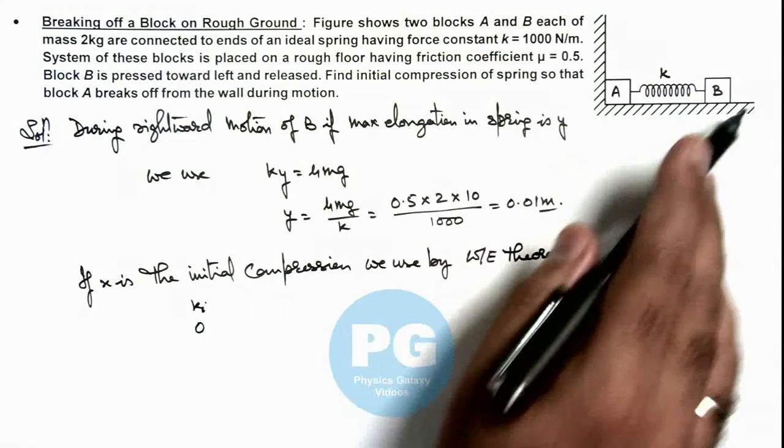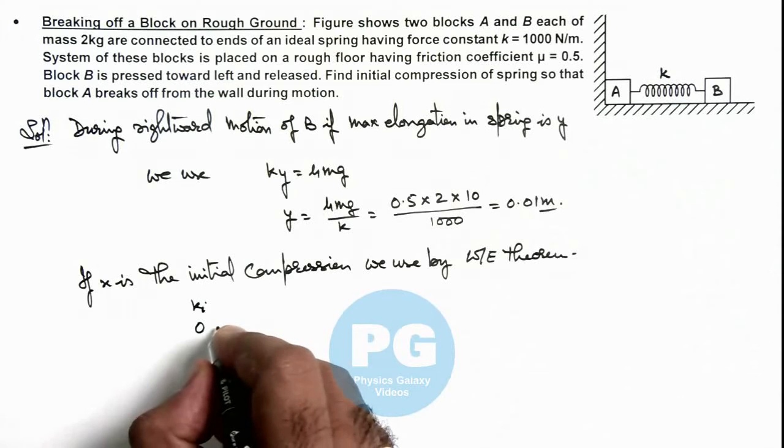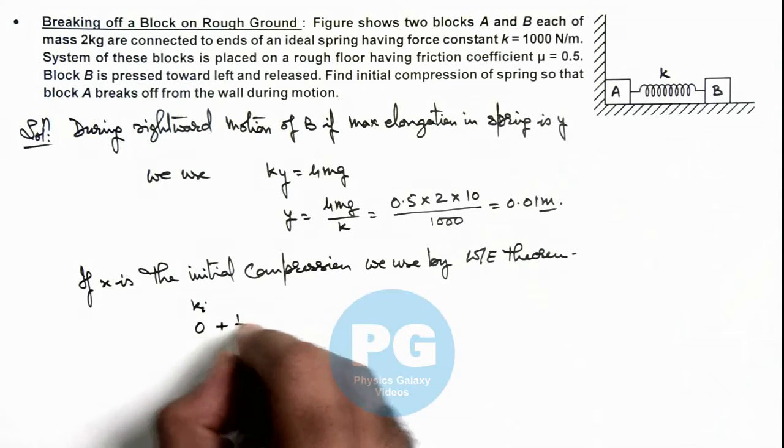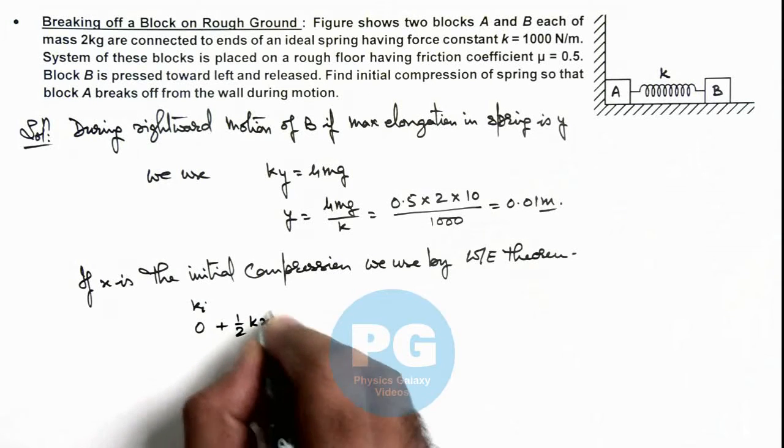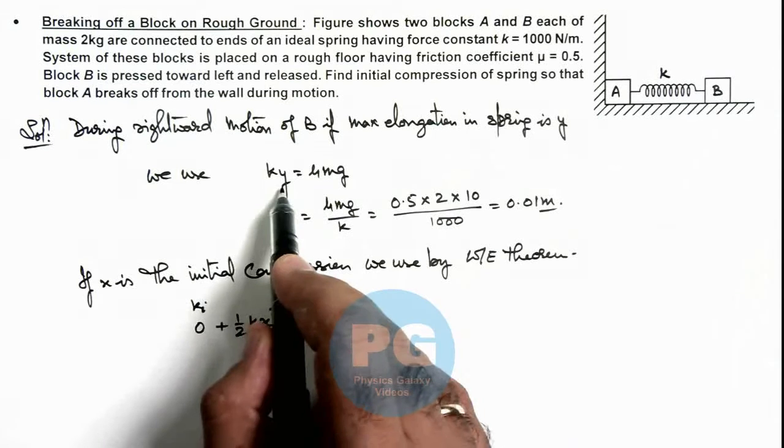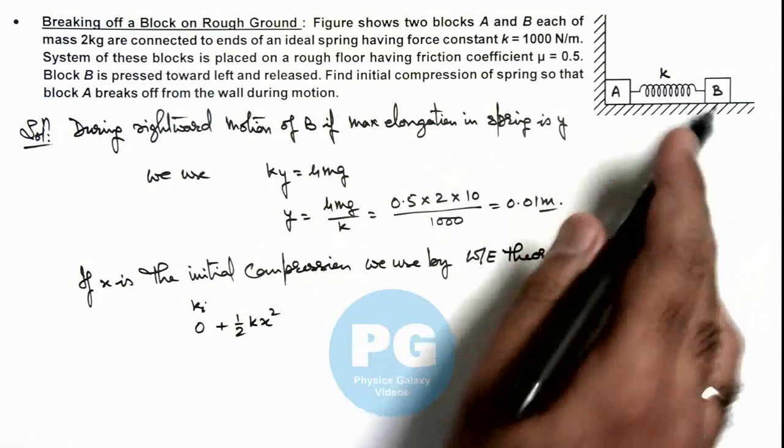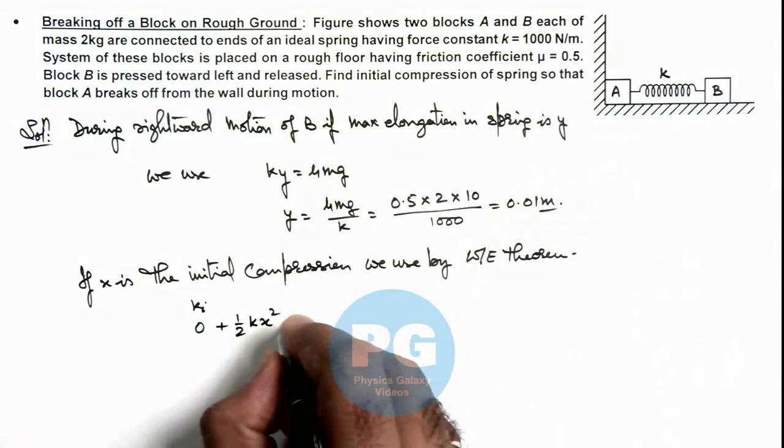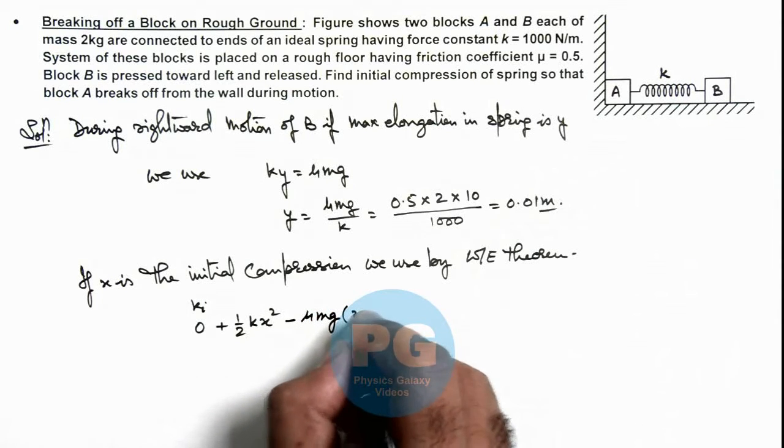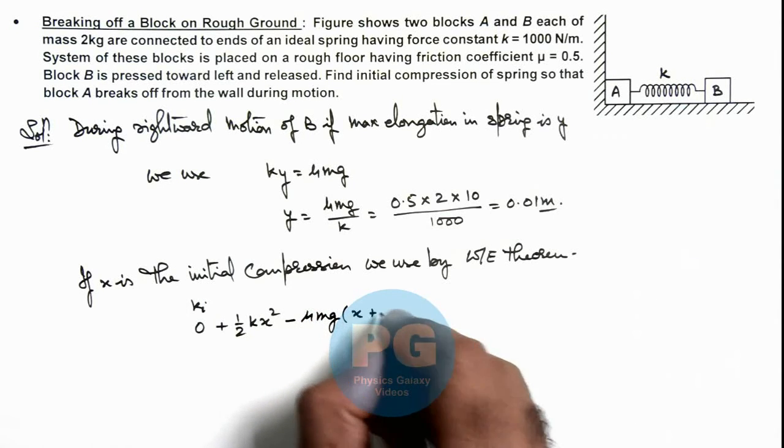When it is released it will move toward right, so work done by spring onto it will be plus half kx squared. And we have taken B will move toward right by a distance y from the natural length of spring, so the work done by friction will be minus μmg multiplied by x plus y.